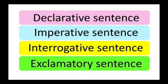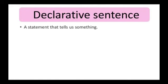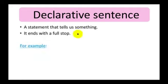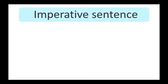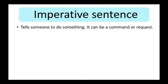What is a declarative sentence? A declarative sentence is a statement that tells us something, and it ends with a full stop. Jadi adalah bentuk pernyataan atau kalimat yang diakhiri oleh titik. For example: 'I went to the shop today.' Next is imperative sentence.